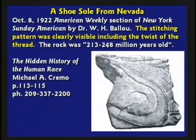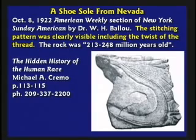American Weekly 1922, the New York Sunday American, ran an article about the sole of a shoe found in Nevada — the stitching pattern was clearly visible, including the twist of the thread. The rock was supposedly 213 to 248 million years old. Michael Cremo, who wrote 'Hidden History of the Human Race,' is a Hindu — the book is excellent on strange things found out of place. But he believes the standard geologic column and really believes that rock is 200 million years old.